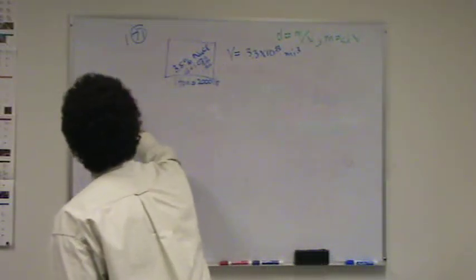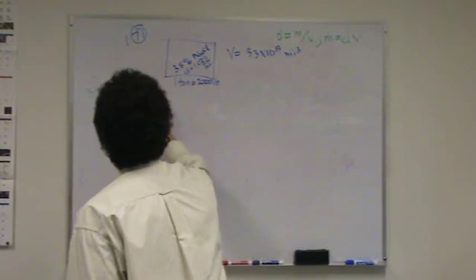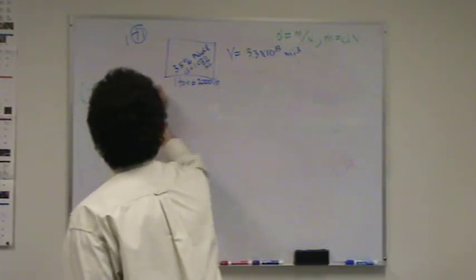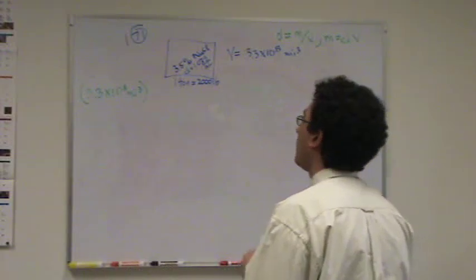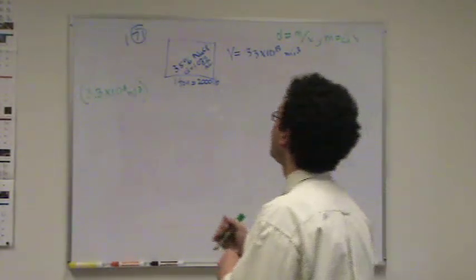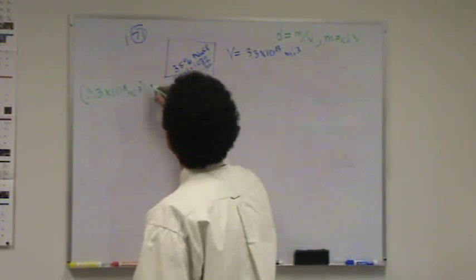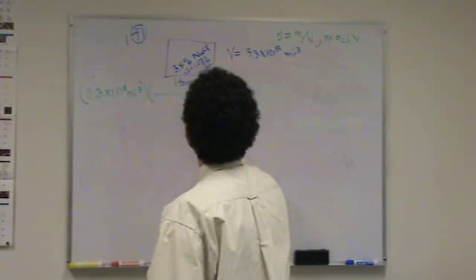If you can do this kind of conversion, you can do whatever. 3.3 times 10 to the 8th miles cubed. Miles have to start going down to milliliters. The standard way that I think of first...